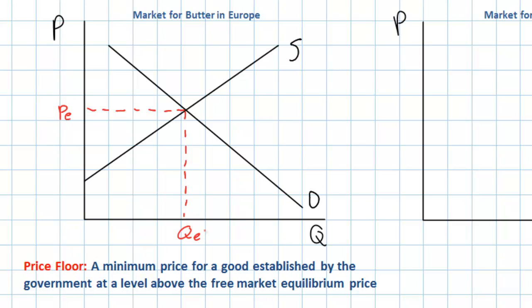A price floor in the market for butter could be set at any price above PE. Let's choose a price up here and we'll call that PF for the price floor. As we learned in previous units, anything that increases the price of a good causes an increase in the quantity supplied of that good, and we can see that here as a movement along the supply curve. The higher price set by the government, meant to help the producers of butter, will cause the quantity supplied of butter to increase from QE to QS.